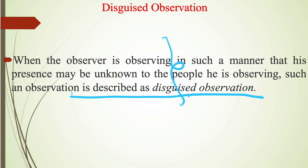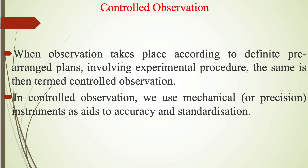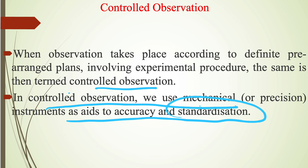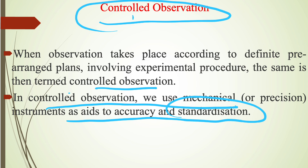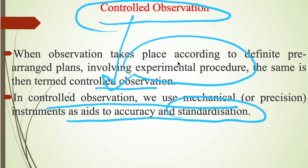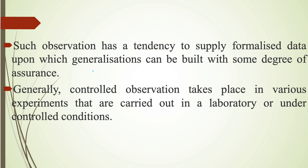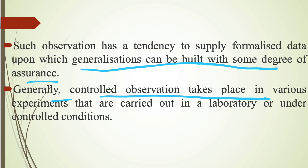In controlled observation, the observation takes place according to definite pre-arranged plans involving experimental procedures. Mechanical or precision instruments are used as aids to accuracy and standardization. It is generally used in experimental types of researches. Controlled observation has a tendency to supply formalized data upon which generalizations can be built with some degree of assurance. It generally takes place in laboratory or controlled conditions, where certain control variables affect the research process.